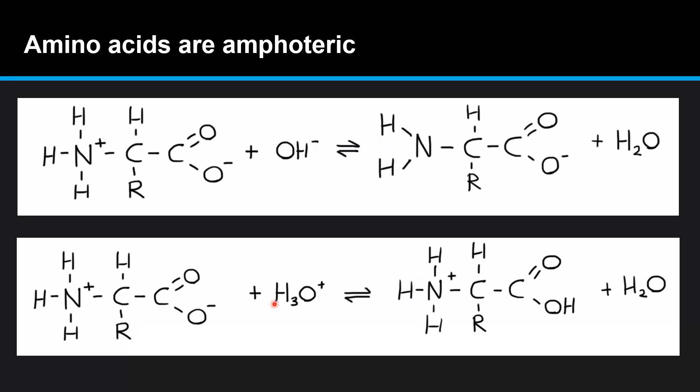In the bottom example the hydronium ion which is the H3O plus is donating a proton to the amino acid. So the amino acid is accepting the proton, it's acting as a Bronsted-Lowry base. So amino acids can act as acids as in this first example here or they can act as bases in the second example.